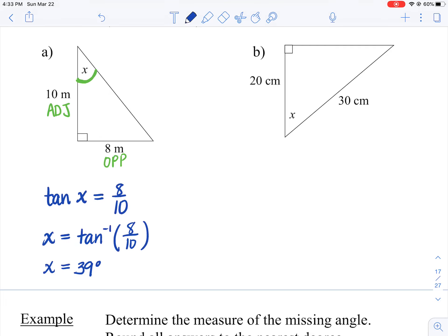Okay, part B. You're going to label the two given sides with X as the reference angle. So the 20 will be the adjacent. 30 will be the hypotenuse.